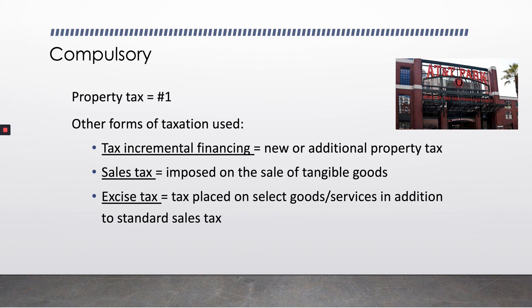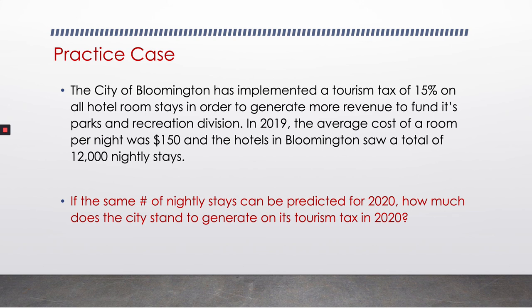Let's look at a practice case to get an idea of what compulsory revenue might look like in real life. The city of Bloomington has implemented a tourism tax of 15% on all hotel room stays in order to generate more revenue to fund its parks and recreation division. In 2019, the average cost of a room per night was $150, and hotels in Bloomington saw a total of 12,000 nightly stays. If the same number of nightly stays can be predicted for 2020, how much does the city stand to generate on its tourism tax in 2020? Take a few minutes to work through that.